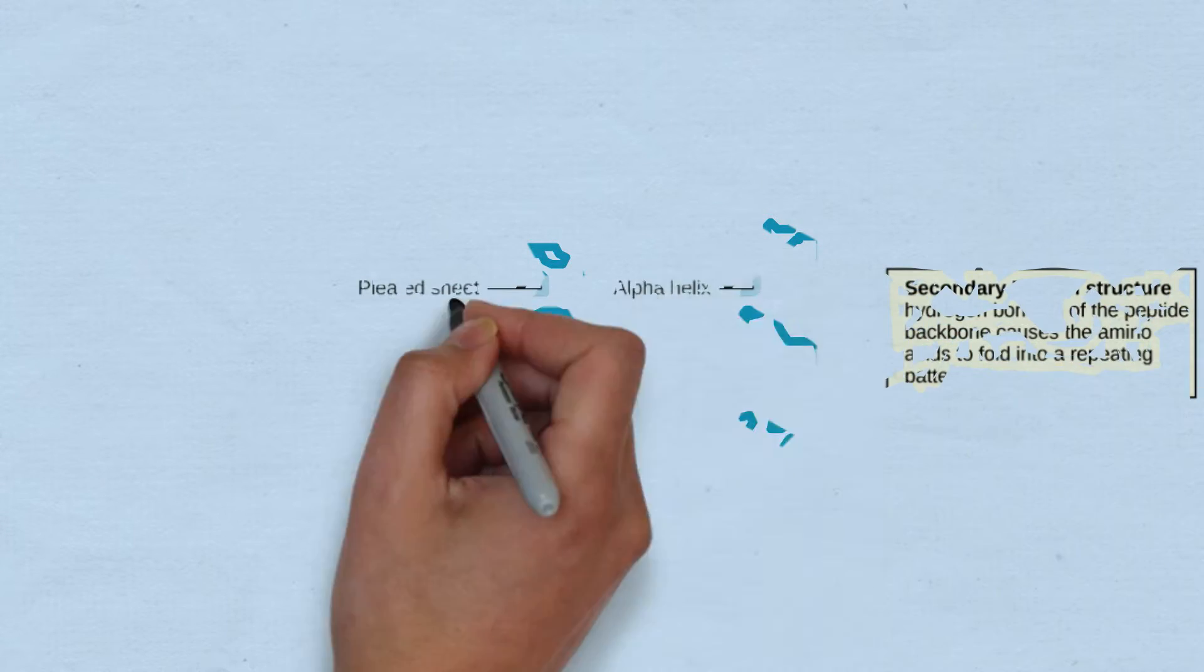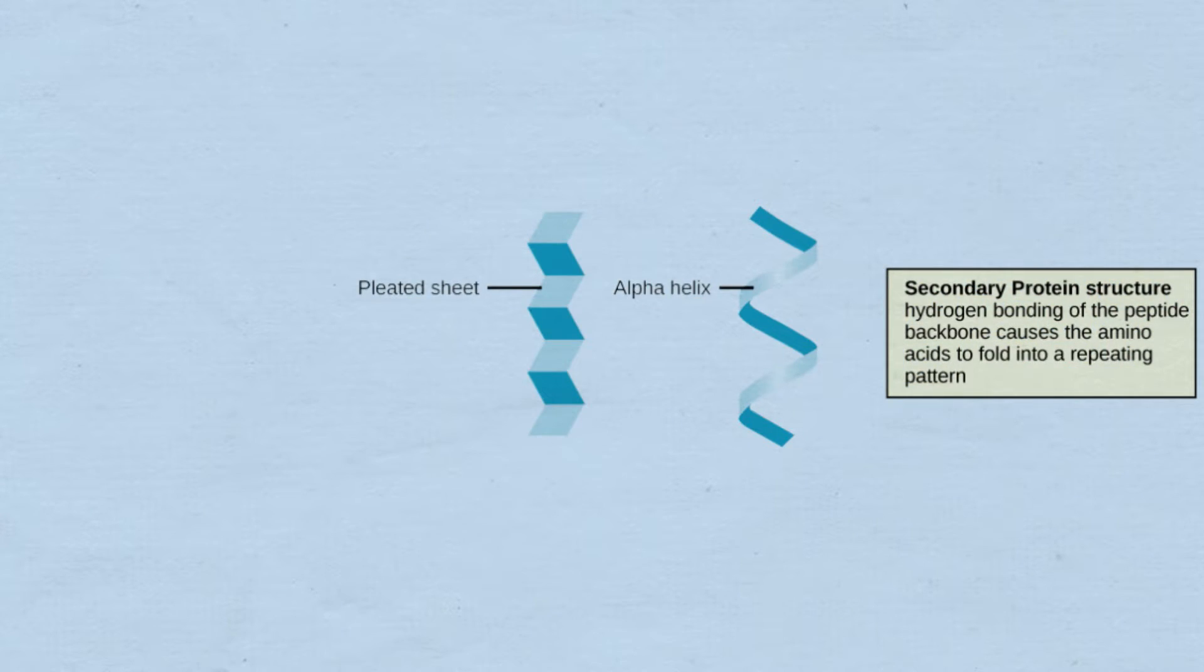The second level of protein structure is the secondary protein structure. Here the straight chains of peptides begin to fold. The peptide chains can fold into an alpha helix or a beta pleated sheet. These structures are held together by hydrogen bonds.